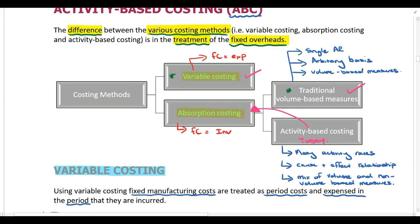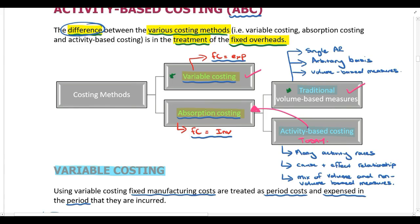That is the difference between traditional absorption costing and activity-based costing. Please note that both are absorption costing — with both, we include our fixed costs in the cost of inventory. With variable costing, fixed costs are expensed in the period incurred. The only difference between all of these costing methods is in the treatment of fixed overheads.